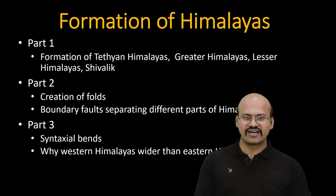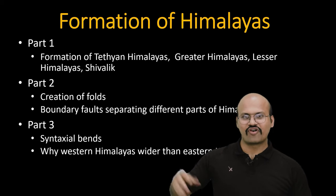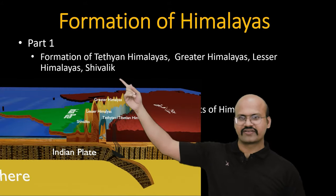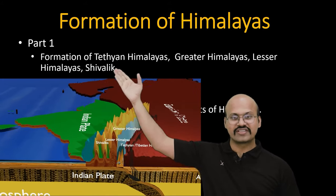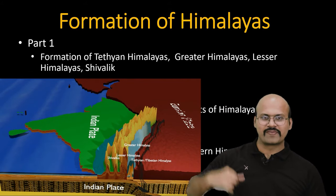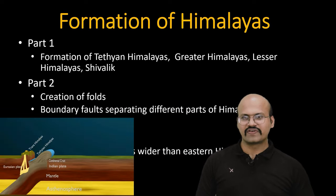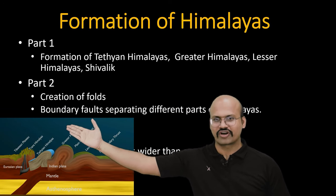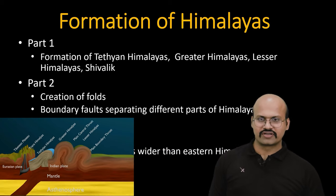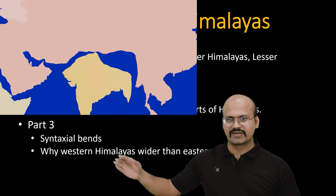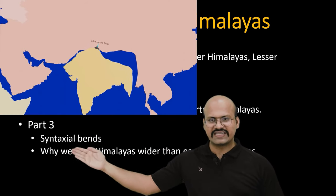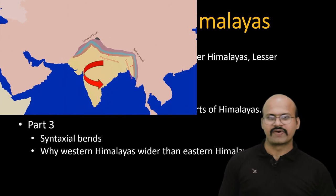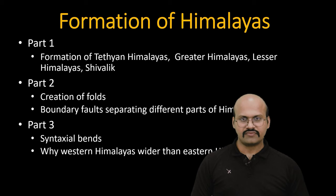The whole video series on the formation of Himalayas is divided into three parts. In the first part, which we have already discussed, we covered how the different regions of Himalayas were formed. In this part we will see how folds are created in the Himalayan mountains and what are the meanings of these boundary folds. In the third part we will discuss the syntaxial bands and why western Himalayas are wider than eastern Himalayas.